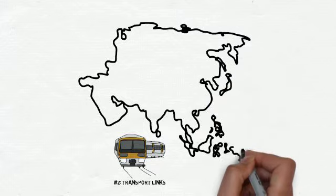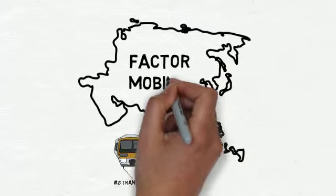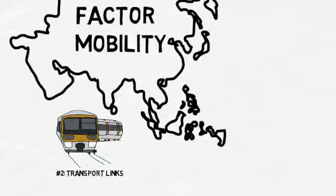With train lines connecting the two countries, labour and other factors of production can be transported more efficiently across borders. Trade between the two countries would therefore increase.